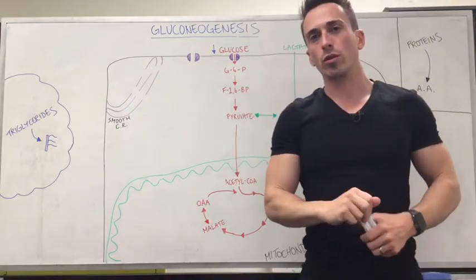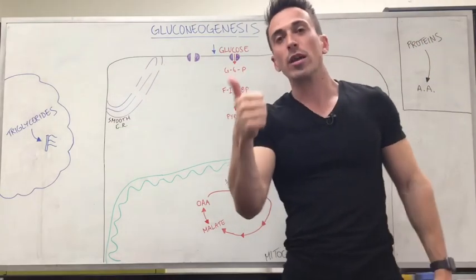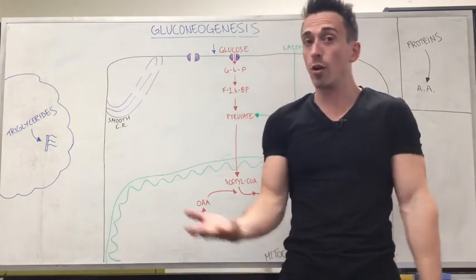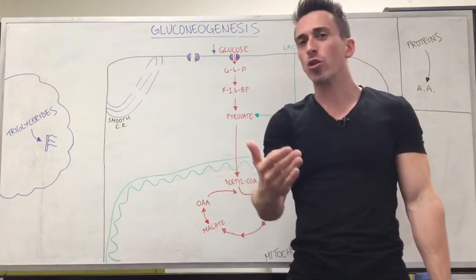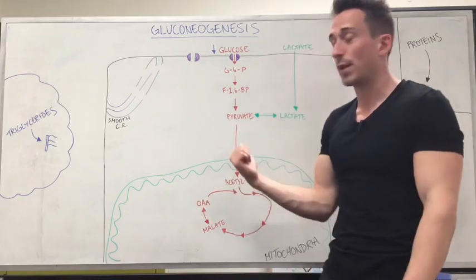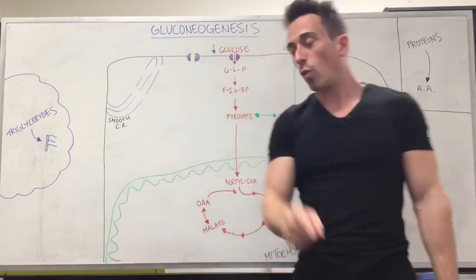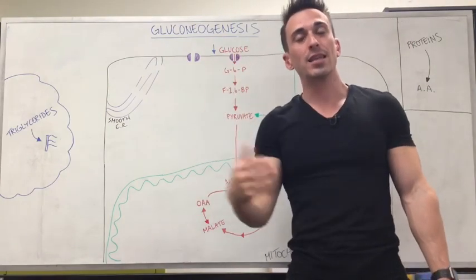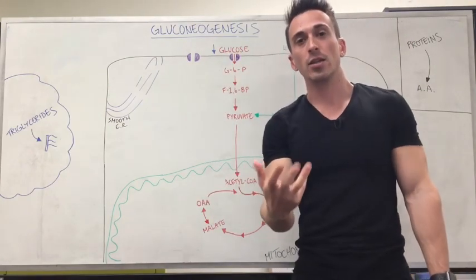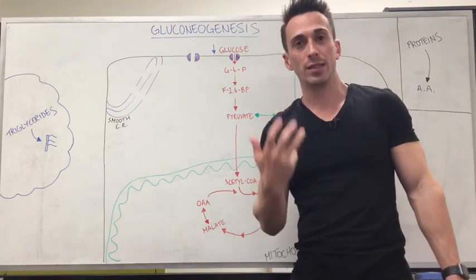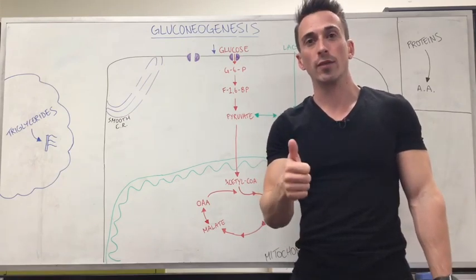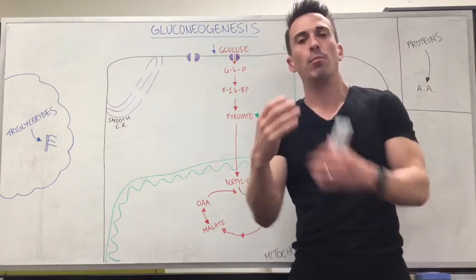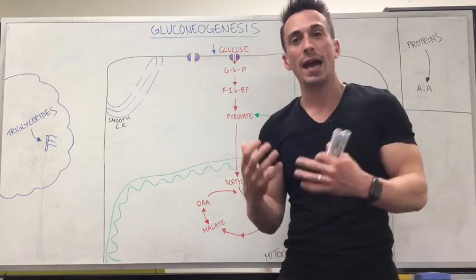Now why do we want to produce glucose? A couple of reasons. One, the brain's only energy source is glucose. Now you may say to me, what about ketones? I know ketones can fuel the brain — that's true, but it's a backup energy source and I'll talk about that very shortly. Sometimes glucose is low in the body, which can happen in fasting states — in what we call the post-absorptive state — when we need to increase our blood glucose levels back to that four to six millimoles per litre that it should be at.